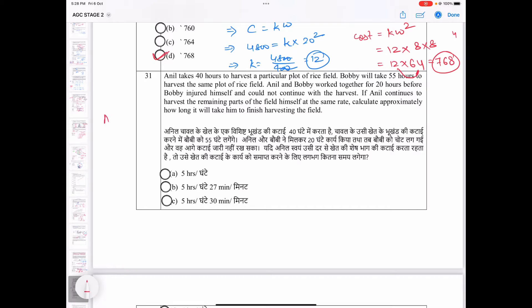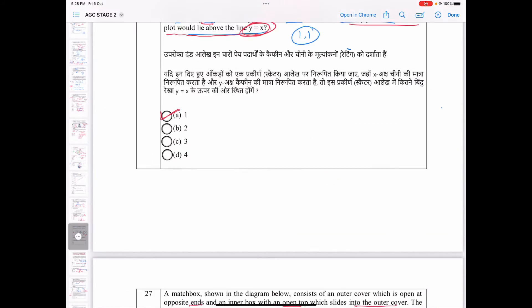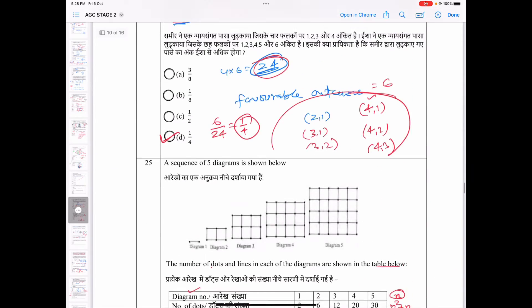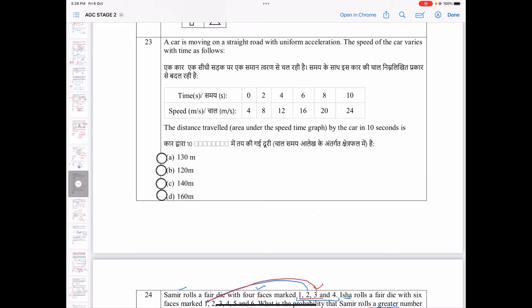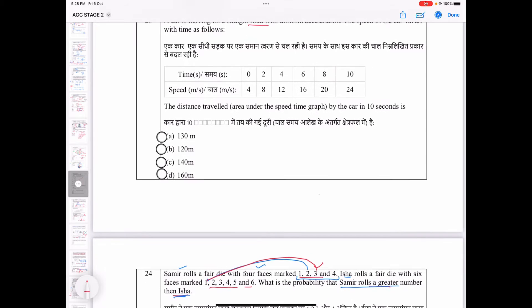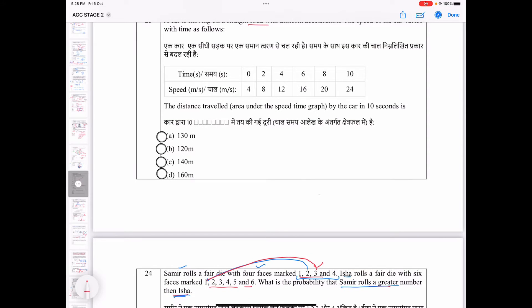Hello students, welcome to R.A. Batgani challenge stage 2, detailed solution. In this video, we are going to discuss question number 23. Last video, we haven't covered question number 23. So, let's see it first. A car is moving on a straight road with uniform acceleration. The speed of the car varies with time as follows. Here is a table given here.